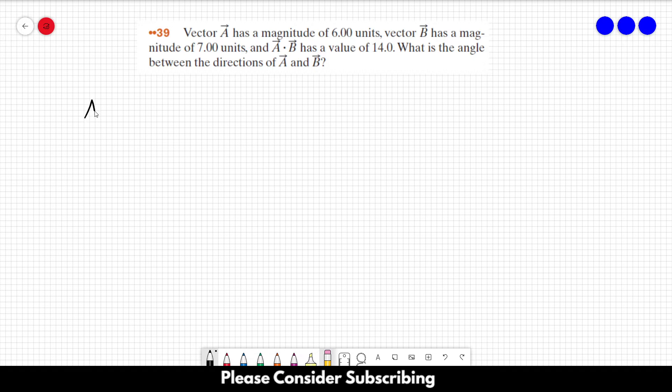So we know that the magnitude of vector A is equal to 6, the magnitude of vector B is equal to 7, and A dot B is equal to 14.